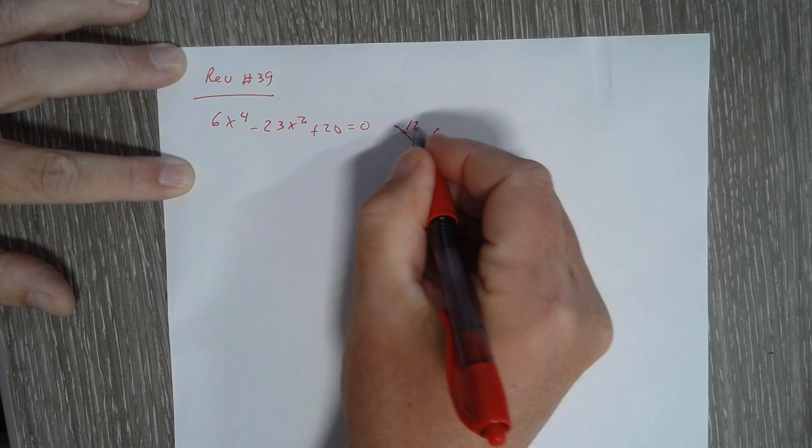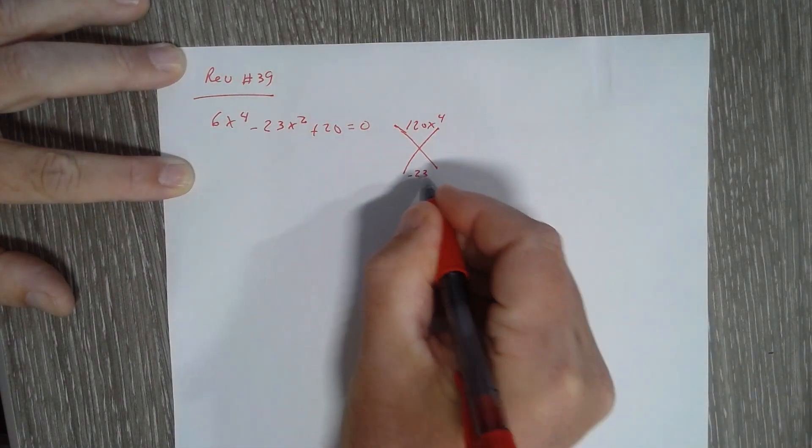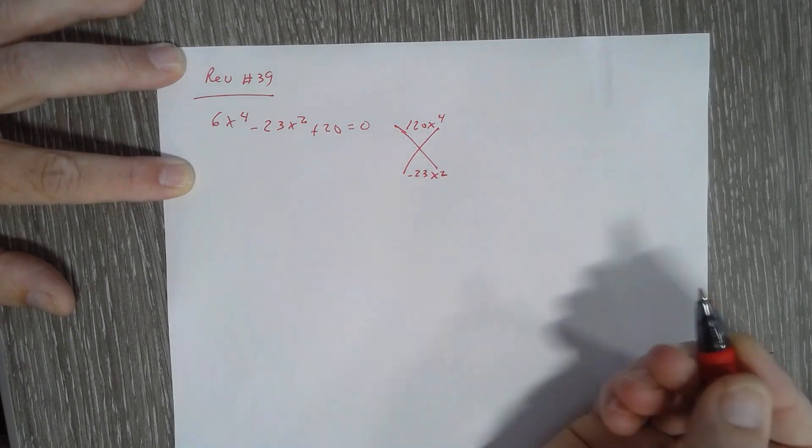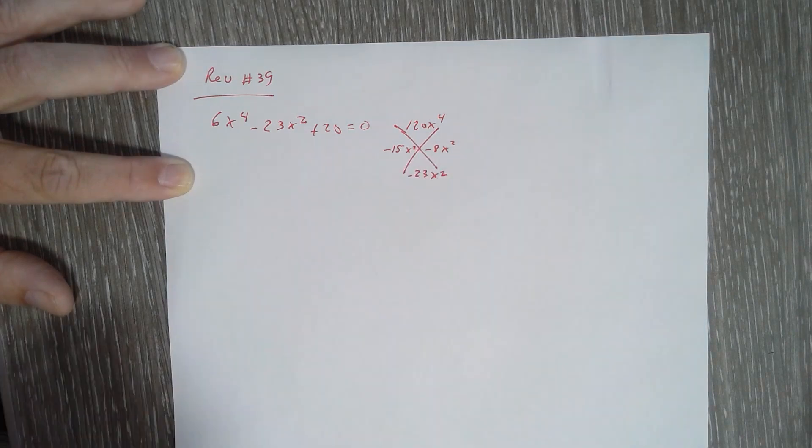6 times 20 is 120. X to the fourth. I want negative 23 X squared. I believe that's going to be negative 15 and negative 8. And they are both going to be X squared.